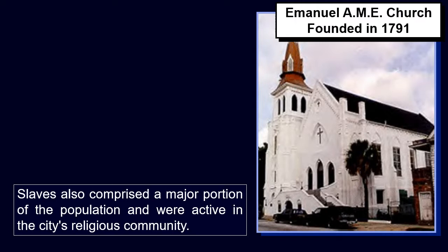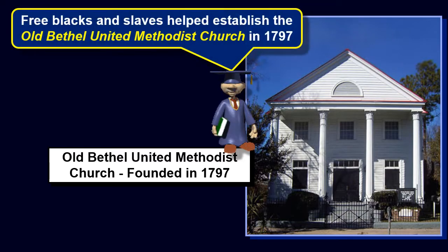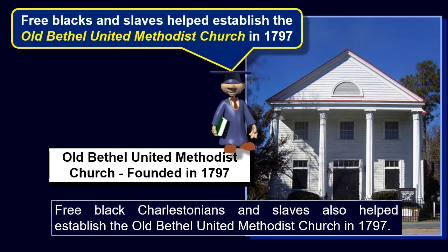Slaves also comprised a major portion of the population and were active in the city's religious community. The Emanuel A.M.E. Church stems from a religious group organized solely by African Americans, free and slave, in 1791. It is the oldest A.M.E. Church in the South and the second oldest A.M.E. Church in the country. Free black Charlestonians and slaves also helped establish the old Bethel United Methodist Church in 1797.